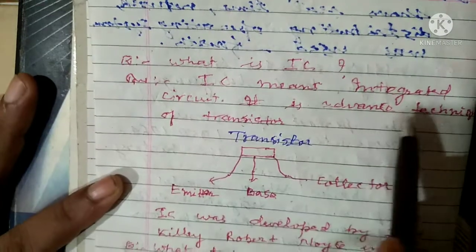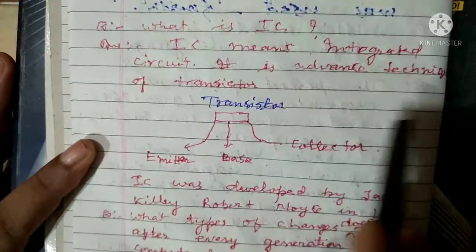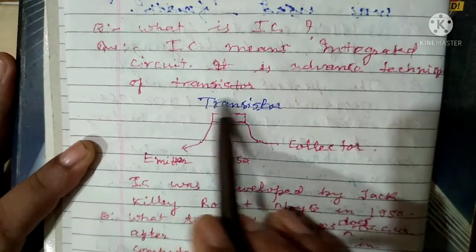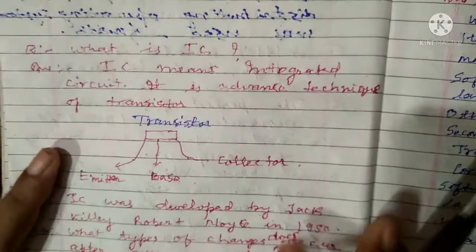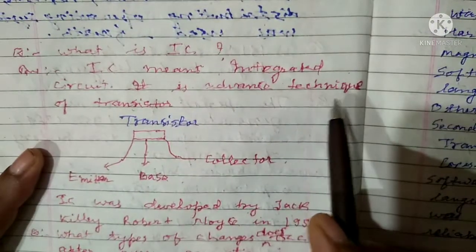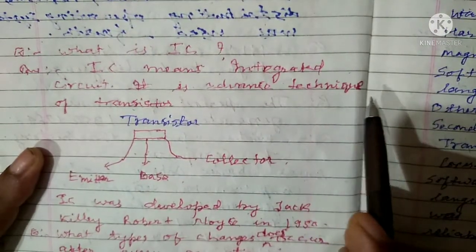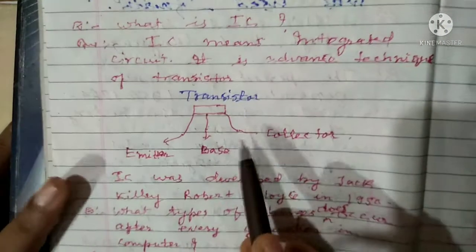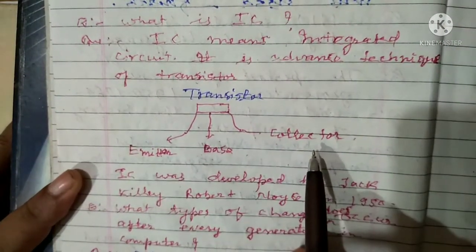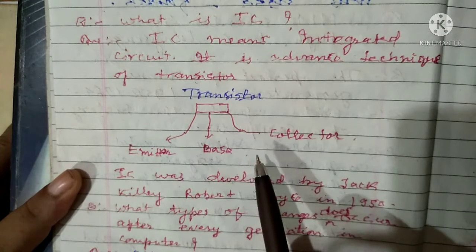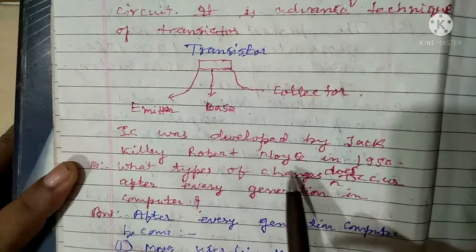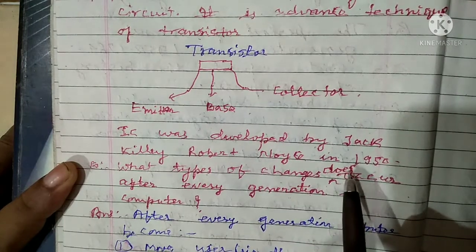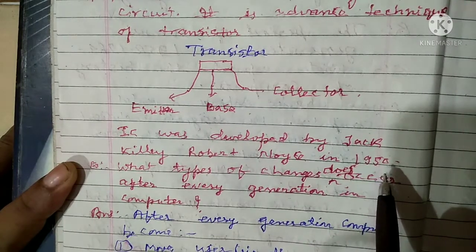What is IC? IC means integrated circuit. It is an advanced technique based on the transistor — transistors have emitter, base, and collector, but in IC there are many more connections. IC was developed by Jack Kilby and Robert Noyce in 1958.